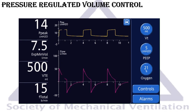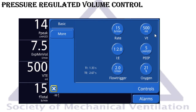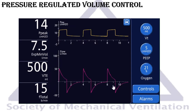Now let's go to our lung ventilator simulator and set PRVC — called APV on Hamilton ventilators. The controls include tidal volume set at 500, PEEP, oxygen, respiratory rate, I:E ratio or inspiratory time, and the trigger. With a passive patient and normal respiratory mechanics, you can see a square airway pressure waveform and a decelerating flow waveform. The patient is receiving a peak inspiratory pressure of 14 — meaning 9 cmH₂O over the set PEEP.